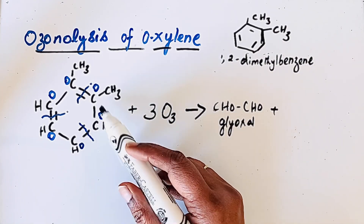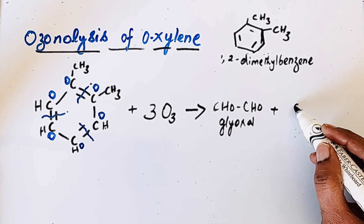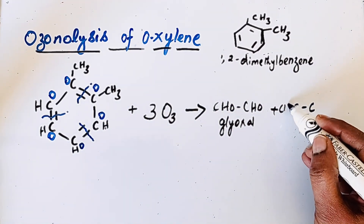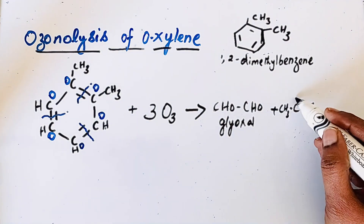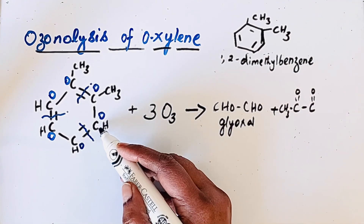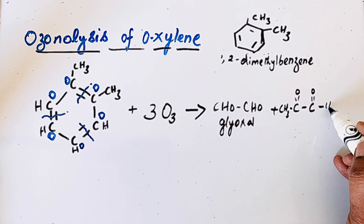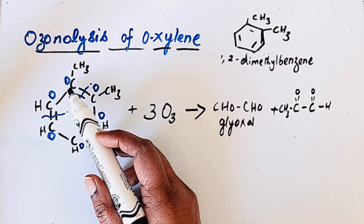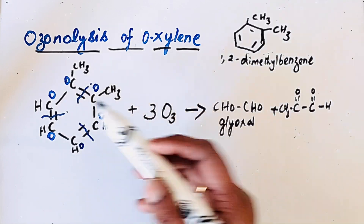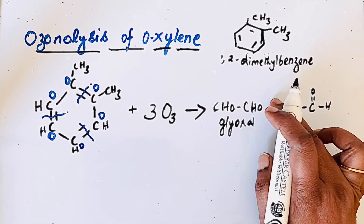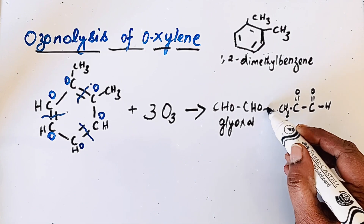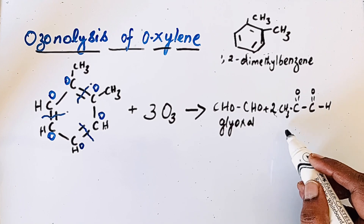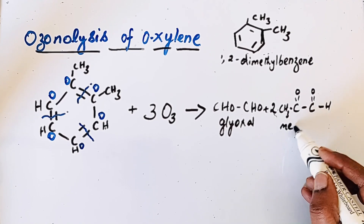We also have a carbon-carbon bond where one carbon is attached to a CH3 group with a double bond to O, and the other carbon also has a double bond to O with a hydrogen. Similarly, another molecule has the same structure: CH3-CO-CHO. So we have two molecules of methyl glyoxal (CH3-CO-CHO).